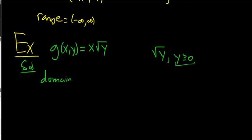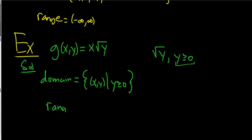X can be any number because it's not in the square root. So the domain here will be the set of all ordered pairs (x, y) such that y is greater than or equal to 0. There is no restriction on x. As for the range, it could be any number — you could make y equal to 1, and then you'd just get x, which can be any number. So the range is negative infinity to infinity.